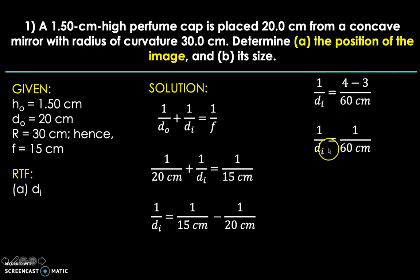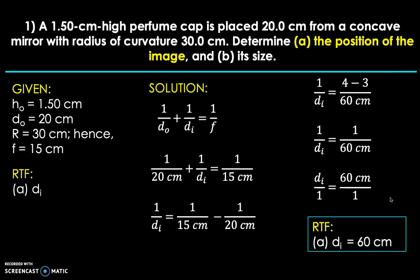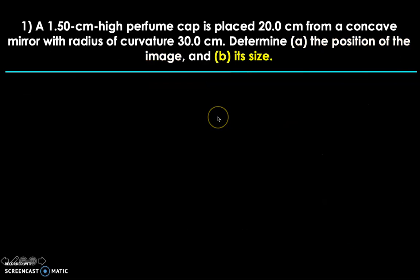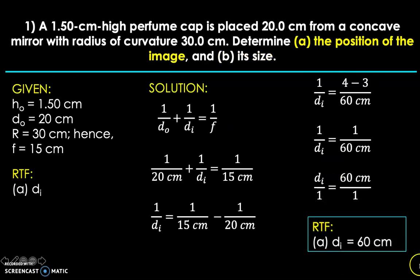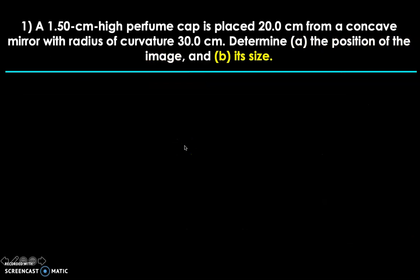And because you see that d sub i is a denominator here and you want it to be on top, all we need to do is to flip the equation vertically. So we're going to have d sub i equals 60 centimeters. And they both have 1 as their denominator. But of course, we all know that that would be simply said as d sub i equals 60 centimeters. Now we're going to go back to that after solving for letter b. So for now, let's solve for the size next. And then we'll go back to what this number physically means later on.